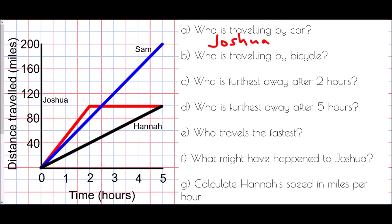Who is travelling by bicycle? Looking at Sam and Hannah, we would assume Sam is faster than Hannah, so Sam is most likely travelling by bicycle. Who is furthest away after two hours? At two hours, Hannah is 40 miles away, Sam is 80 miles, and Joshua is actually 100 miles. So Joshua is furthest away after two hours.